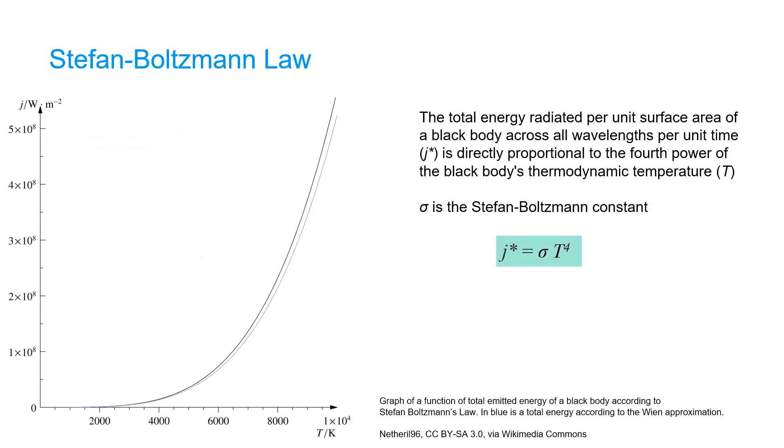That the amount of energy emitted by an object is related to its temperature is well defined by Stefan Boltzmann's law. This law states that the total energy radiated per unit surface of a black body across all wavelengths per unit time, j star, is directly proportional to the fourth power of the black body's thermodynamic temperature T. And here you see that in the Stefan Boltzmann's equation where sigma is the Stefan Boltzmann constant.